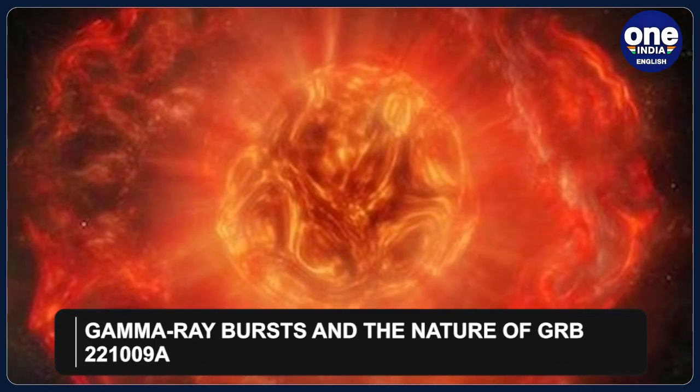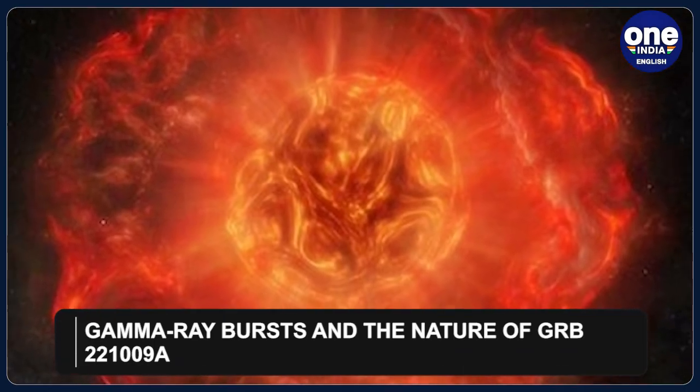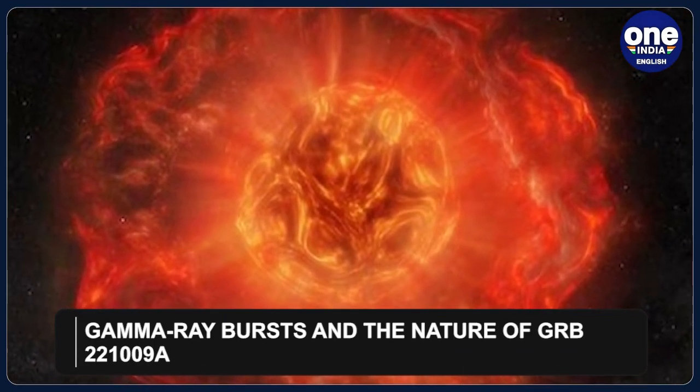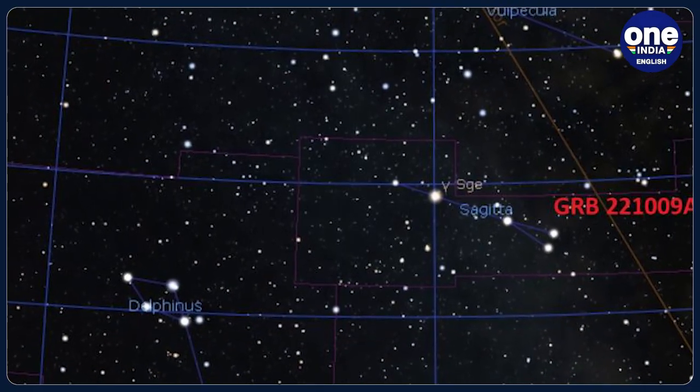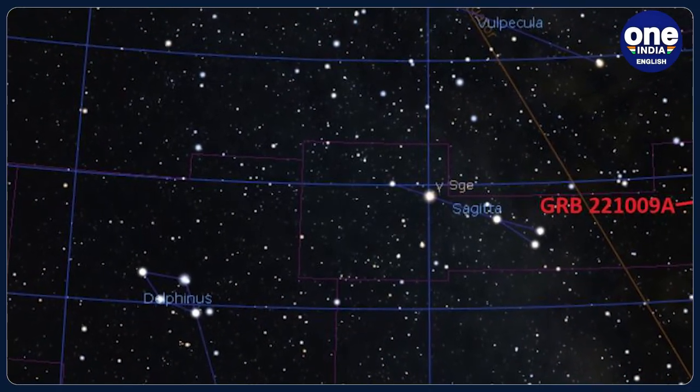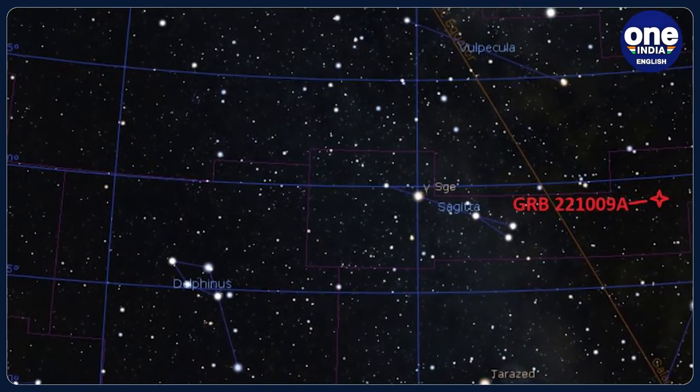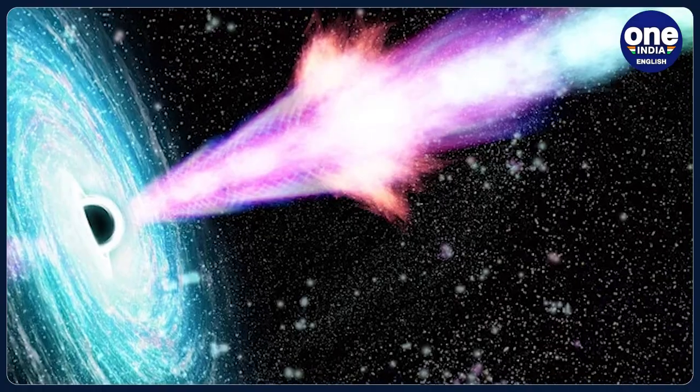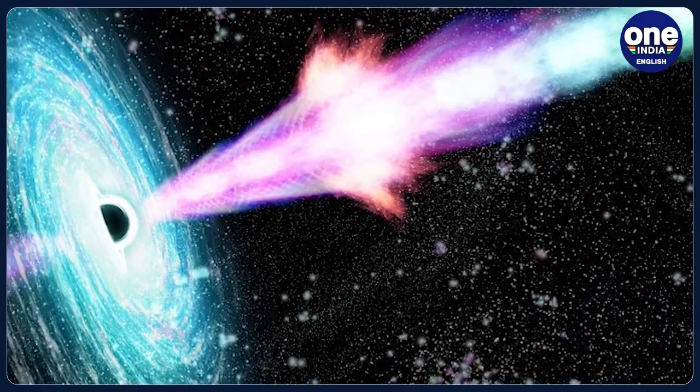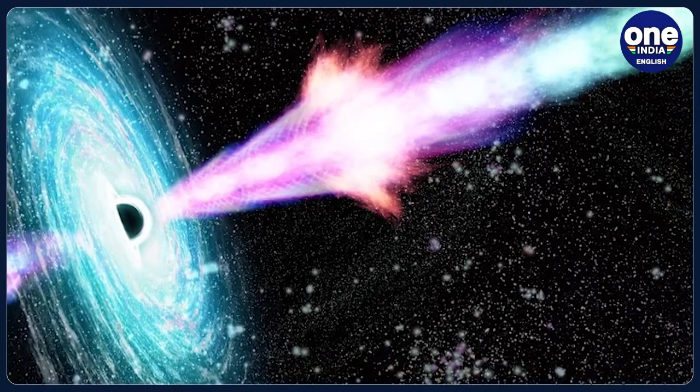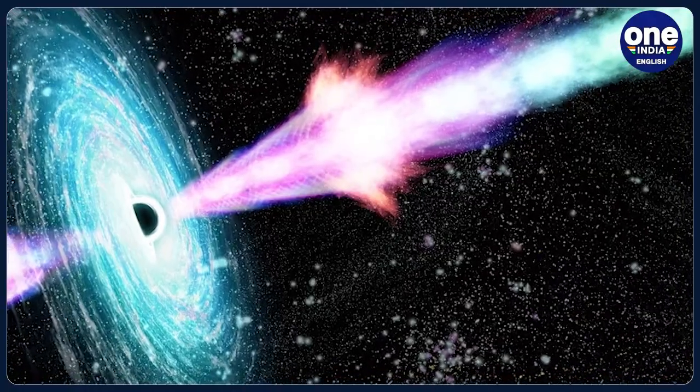Gamma ray bursts, GRBs, are high-energy electromagnetic radiation emissions, and GRB 221009A stands out as the most powerful explosion ever detected in the universe. NASA describes GRBs as the most powerful class of explosions, ranking among the most luminous events known.